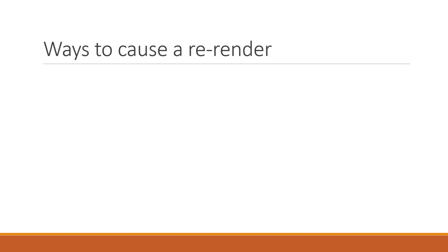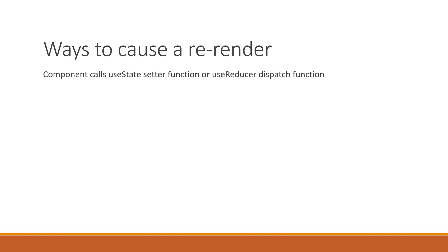Welcome back everyone. So far I've mentioned two ways to cause a re-render in a React app: a component can re-render if it calls the useState setter function or the useReducer dispatch function, and a component can also re-render if its parent component re-renders. Now let's take a look at the context API, which is another way to cause a component to re-render. In this video we are going to understand the rendering behavior in React with respect to the context API.